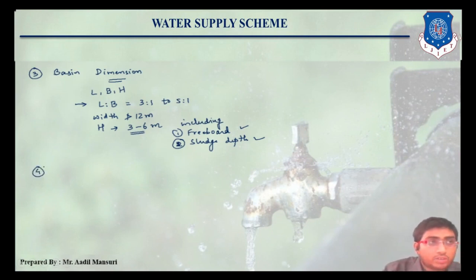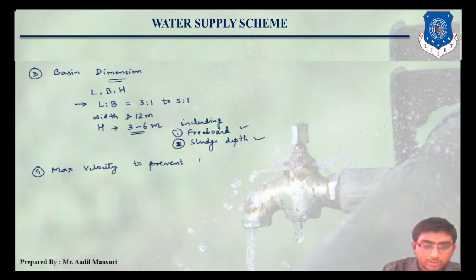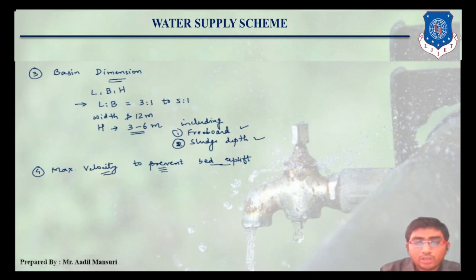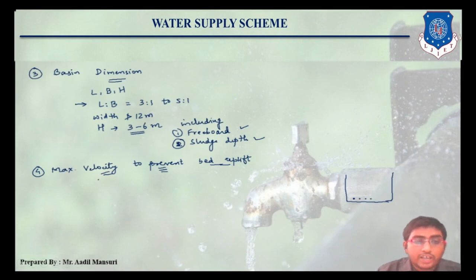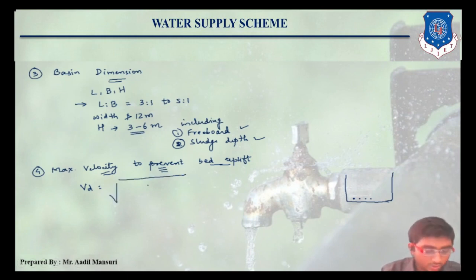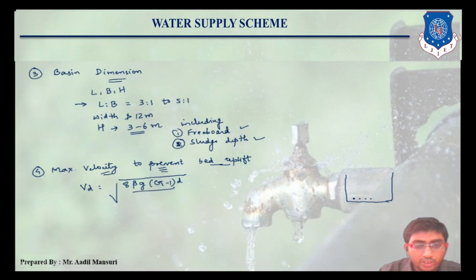The fourth aspect is maximum velocity — maximum velocity to prevent bed uplift. In a particular sedimentation tank, if a particle settles at the bottom of the tank, then due to the flow of velocity, it should not get uplifted. That is the maximum velocity, and it is given by VD equals to square root of 8 beta G (G minus 1) into D upon f-dash.